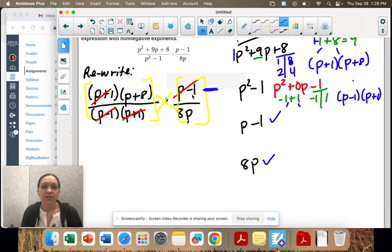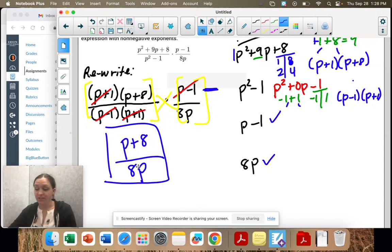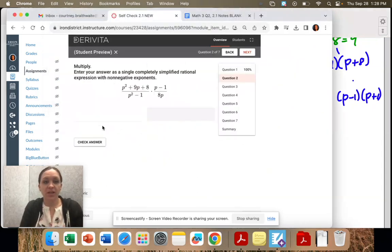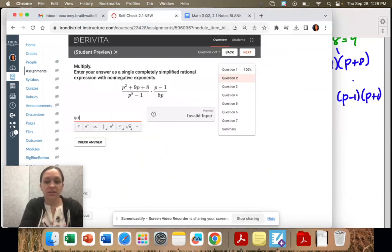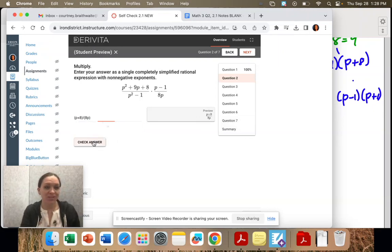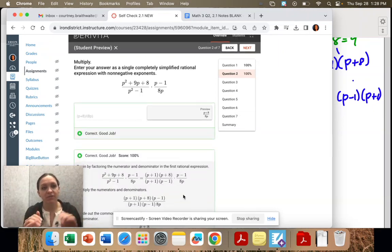So the only thing left on the top is p plus 8. And the only thing left on the bottom is 8p. And that's our answer. So p plus 8 divided by 8p. Oh, look what happened. Doesn't look like mine. Remember, put parentheses around the numerator, parentheses around the denominator. It keeps everything together.